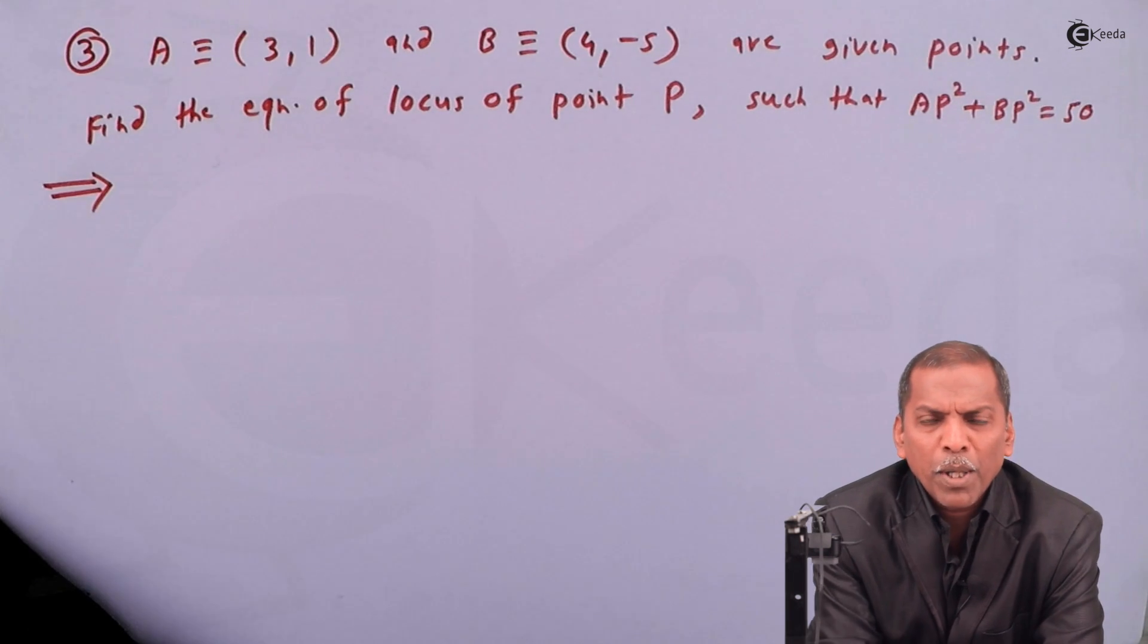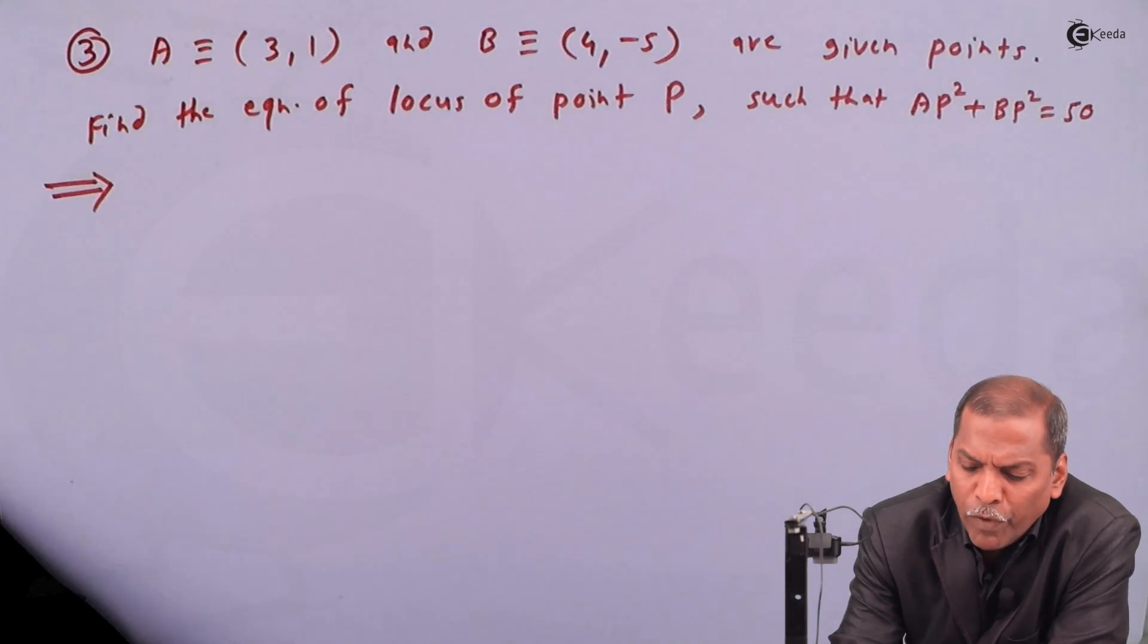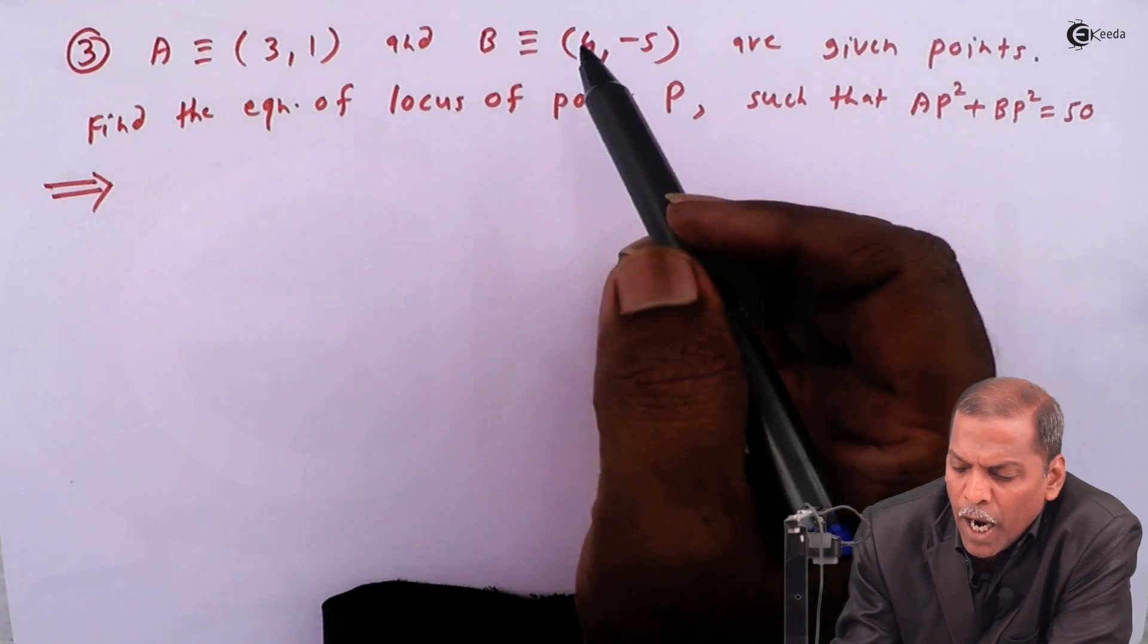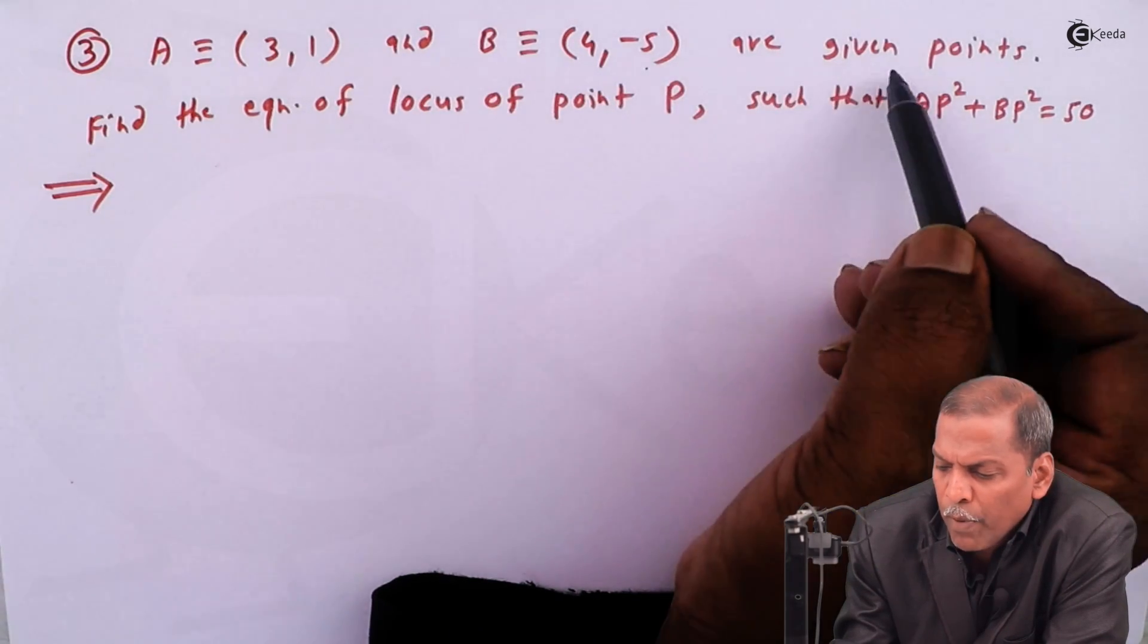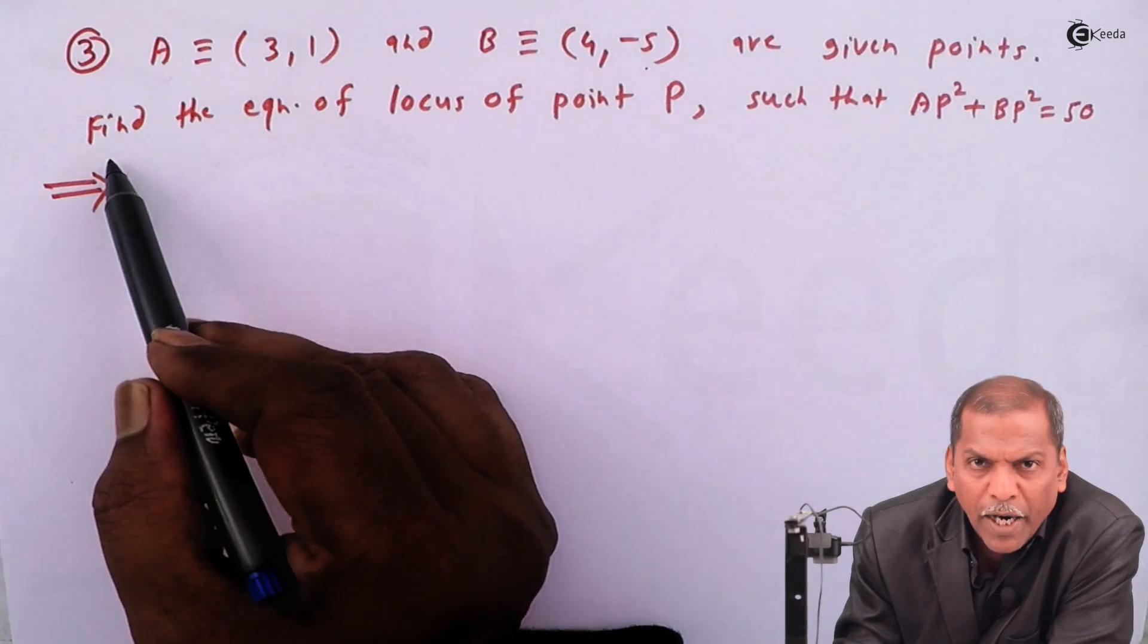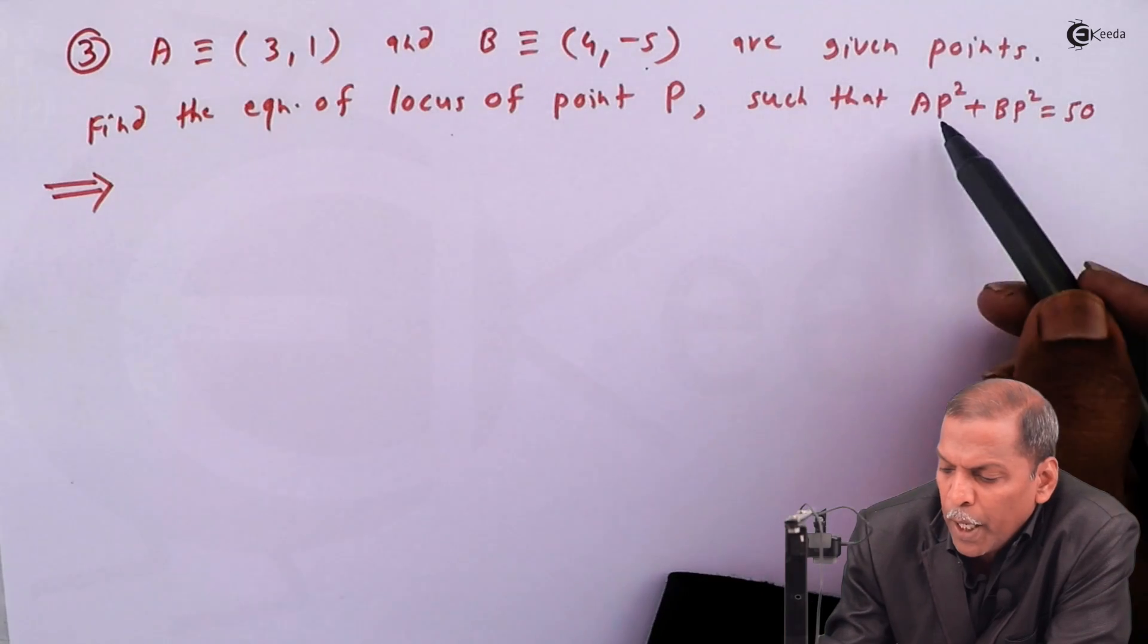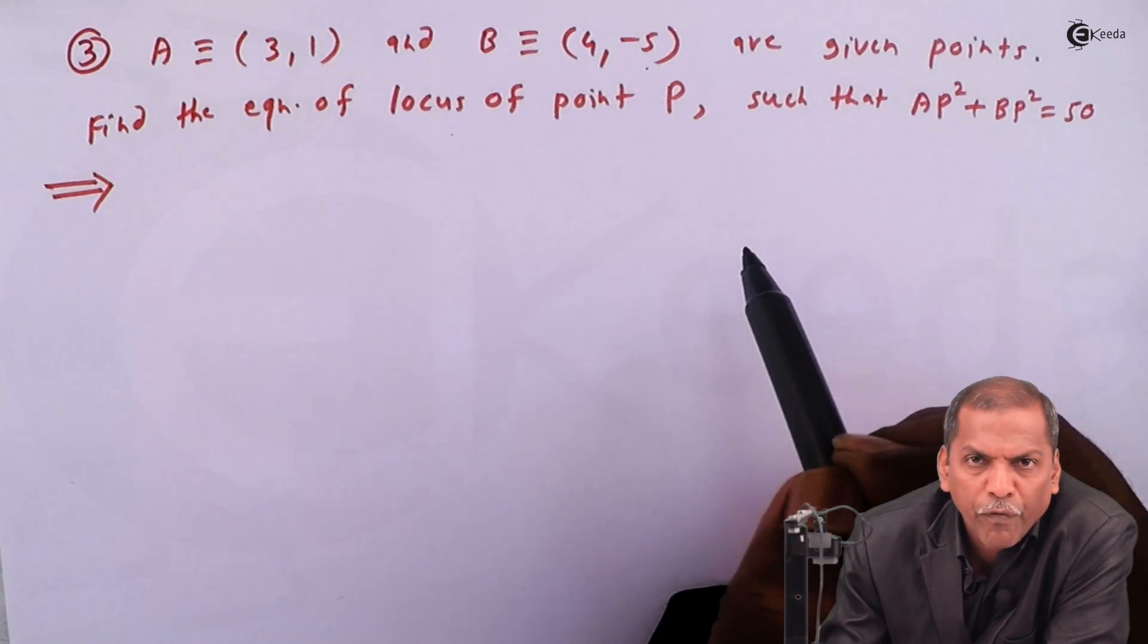Hello friends, now we see question number 3, which is also based on equation of locus of chapter locus. The problem is: A equivalent to (3, 1) and B equivalent to (4, -5) are given points. Find the equation of locus of point P such that AP² + BP² = 50.